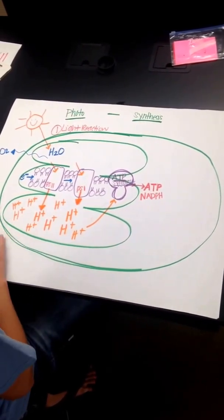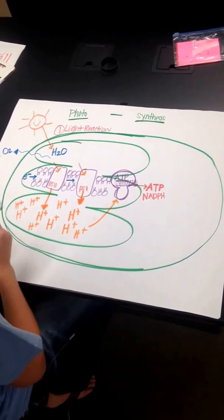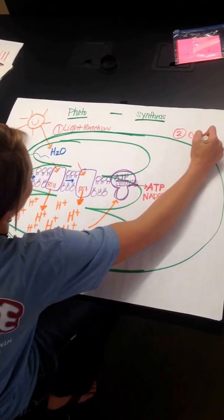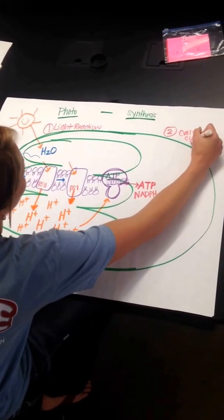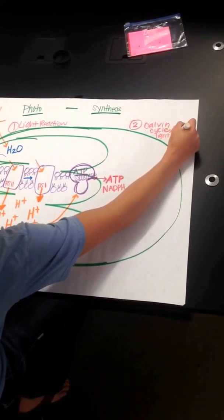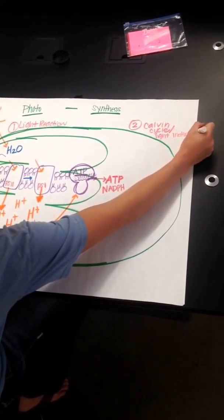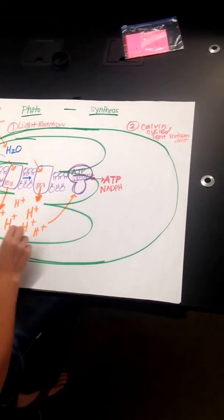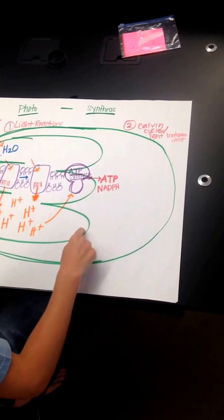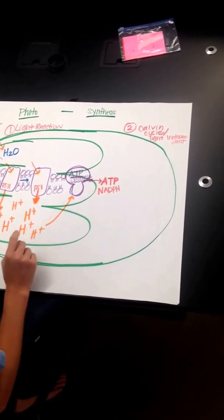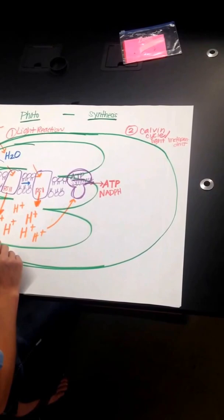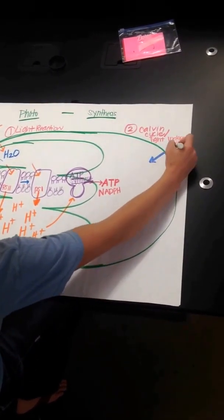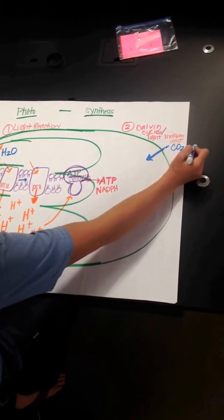The second step of photosynthesis is called the Calvin cycle, or the light-independent. So it doesn't require light, but it can happen all the time. So the second part of photosynthesis happens in the stroma, which is outside the thylakoid. And the first thing in order for the Calvin cycle to happen, CO2 has to enter into the chloroplast. So we need actually three of them, but you need CO2. So CO2 has one carbon in it, so I'm going to draw one carbon right here.